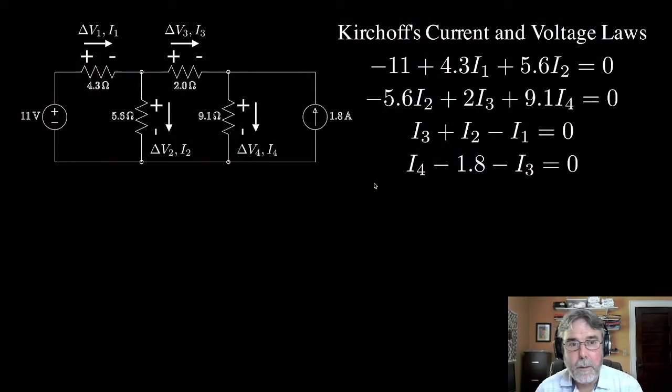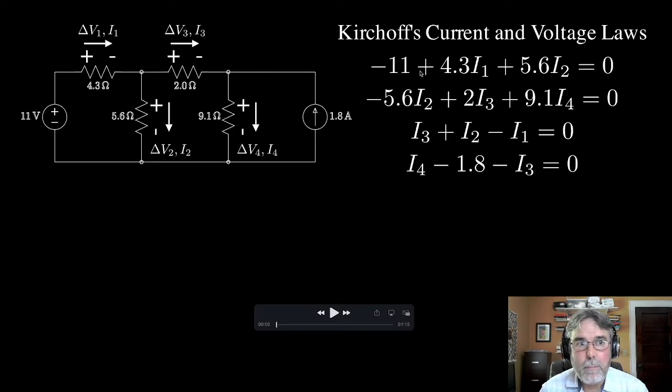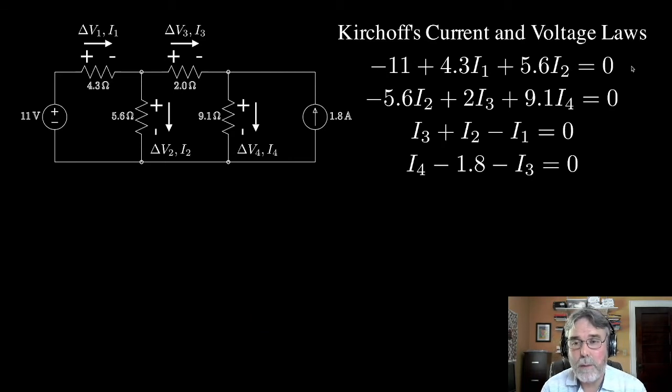The other thing that I realized after I posted the video about Kirchhoff's voltage and current law was that really there was an implied relationship that we used in order to write those guys down. So let me just remind you what they are. We have our circuit, the same circuit we used in the previous two videos, and I simply wrote down for delta V1, I wrote down 4.3 times I1. But really, I could have written Kirchhoff's voltage law as minus 11 plus delta V1 plus delta V2 equals 0, and then written down delta V1 equals 4.3 times I1 as a separate equation.